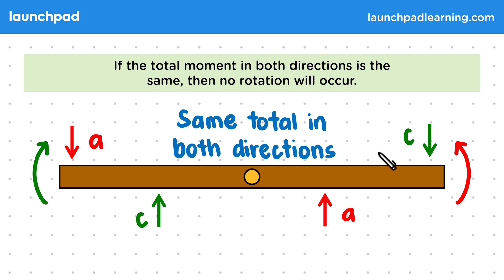This means that the overall clockwise turning effect is cancelled out by the overall anticlockwise turning effect. So the resulting moment is zero, and hence the plank will not rotate.